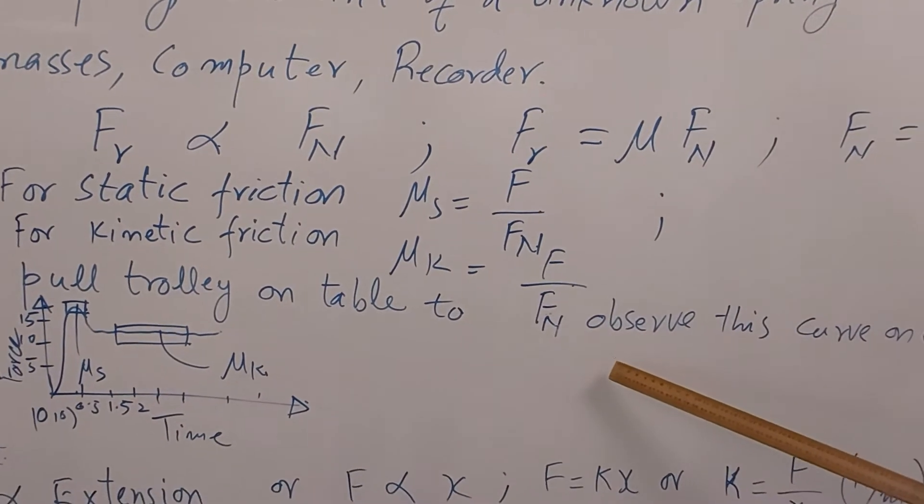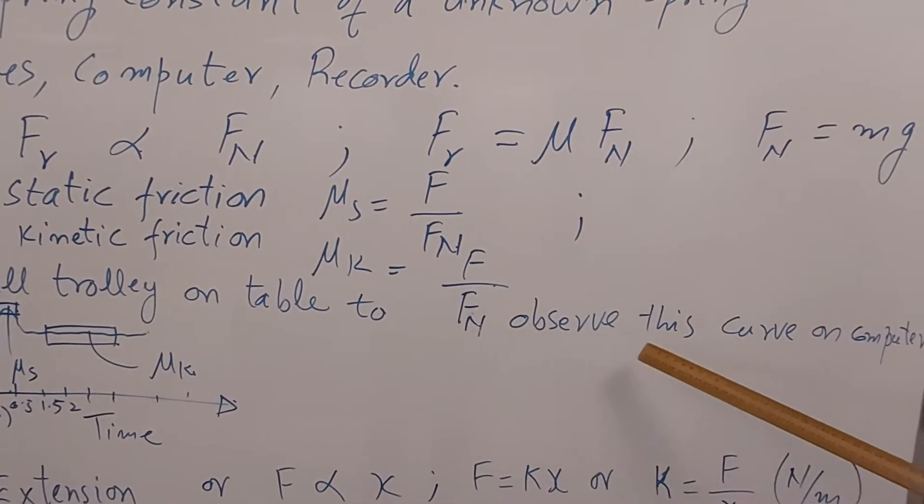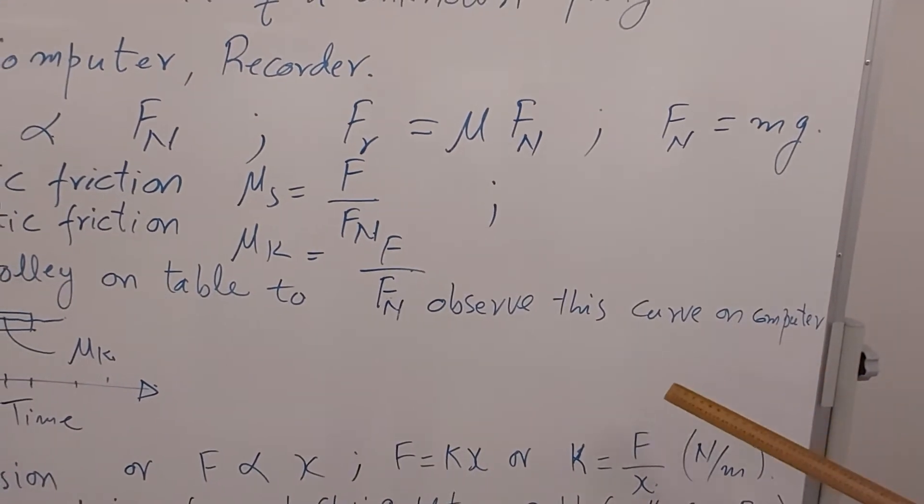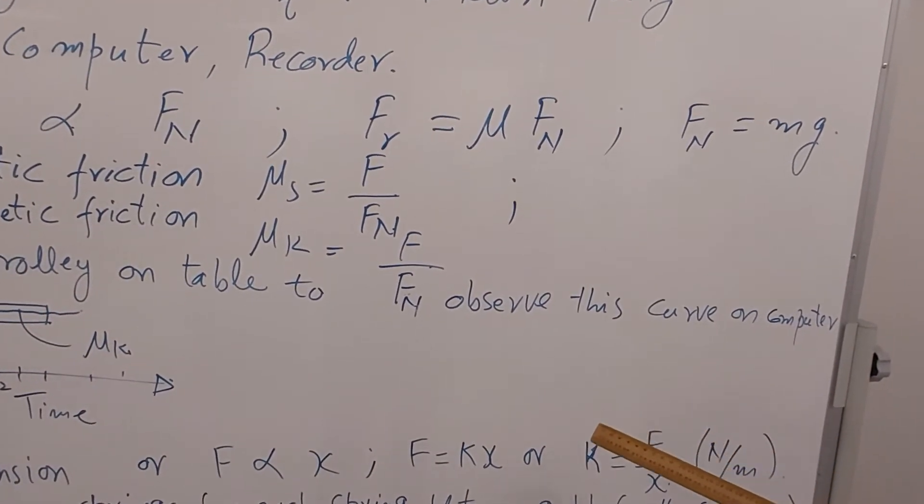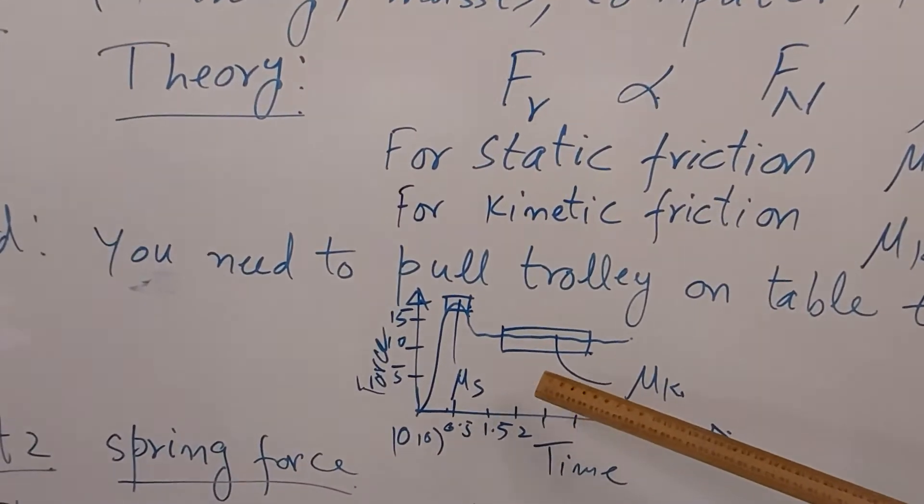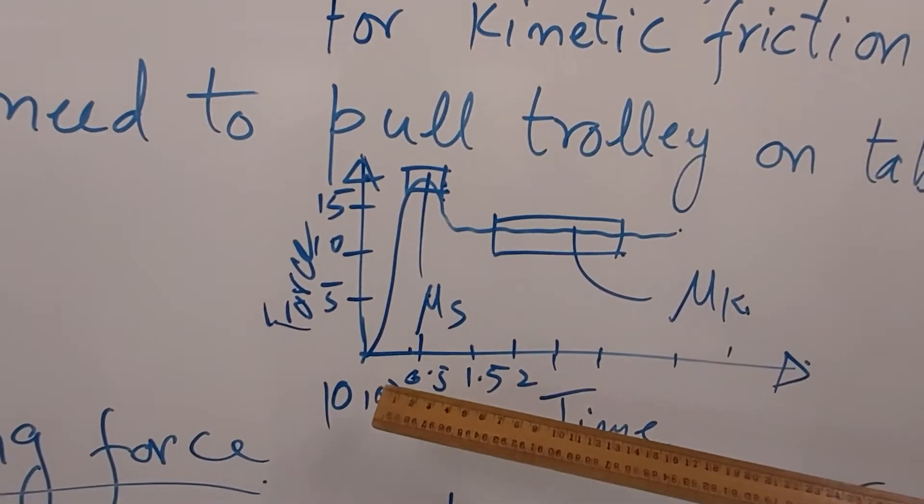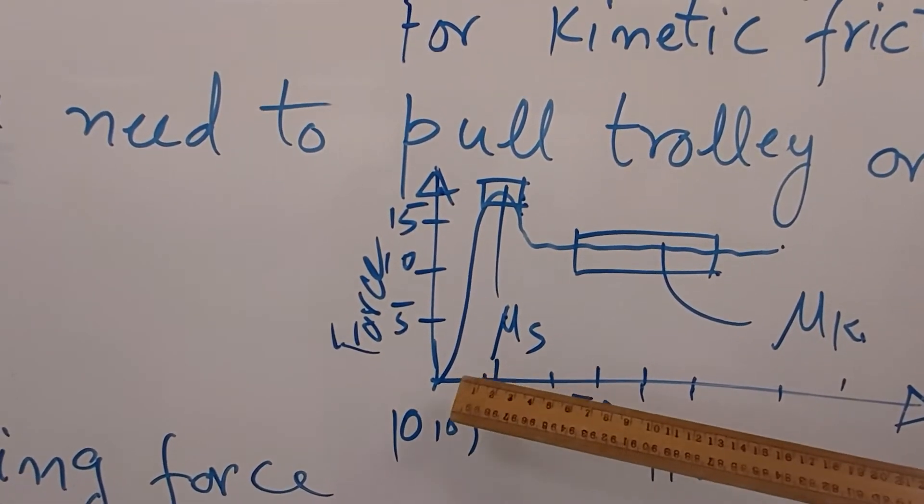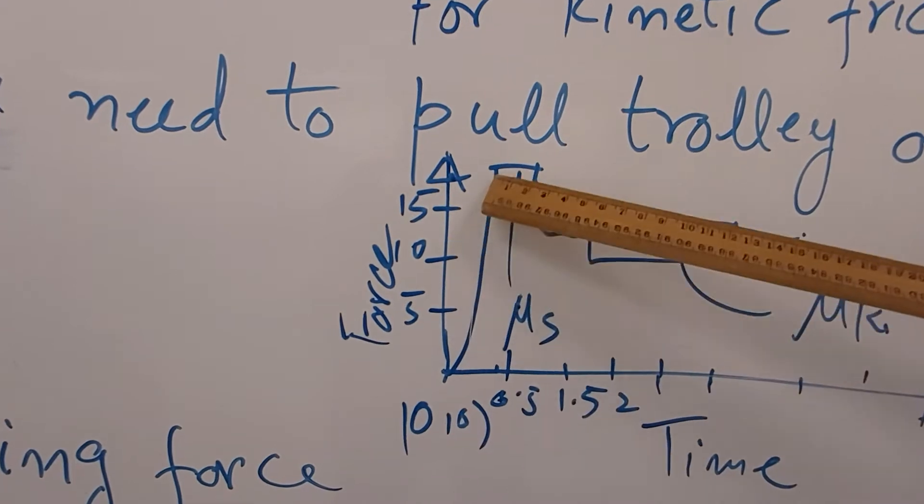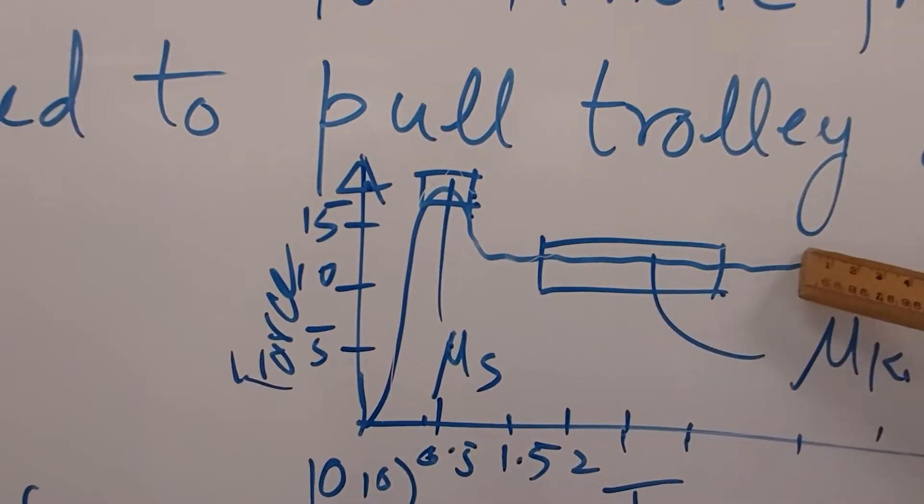You will observe these forces by observing the curve on the computer screen when you pull smoothly the trolley with the weight. Typically the curve will be like this: the computer will plot force here and time here. As soon as you pull the trolley you will see this up peak and then this will flatten out like this.